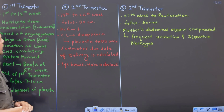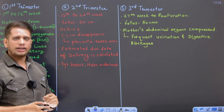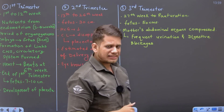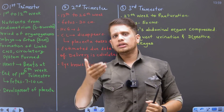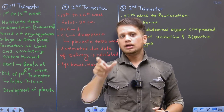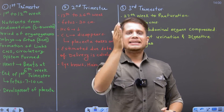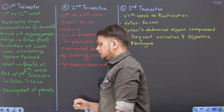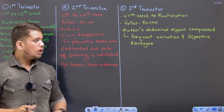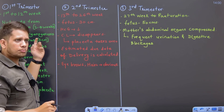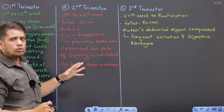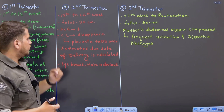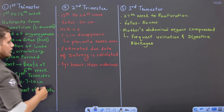Second trimester jo hai, it is from the 13th to 26th week, where the size of the fetus is 30 centimeters. There is a hormone called HCG, called as human chorionic gonadotropin, jis ka level down ho jaata hai. Corpus luteum will eventually degrade and deteriorate, and corpus luteum ka function will be taken up by the placenta. Placenta will maintain that hormonal level, and yaha pe aap estimated delivery date bhi calculate kar sakte hain.